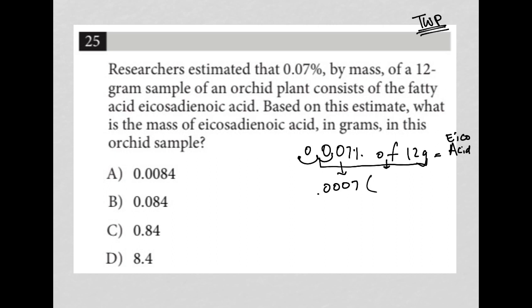Of means multiply, so I'll put parentheses: 0.0007 times 12. Going to my calculator, that equals 0.0084 grams of this acid in the 12 grams of the orchid plant.